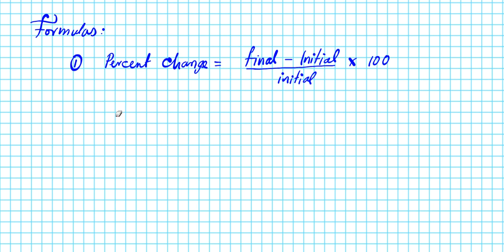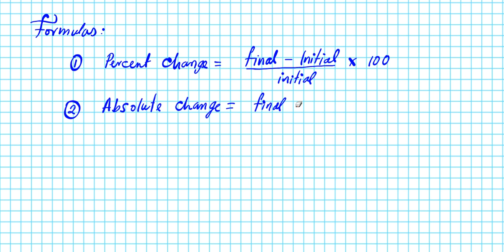Formula number two is actually a piece of the percent change formula — that is the absolute change formula. The absolute change is simply the difference between the final and initial amount: final minus initial. If you extract the numerator component of the percent change formula, you will end up with the absolute change formula.